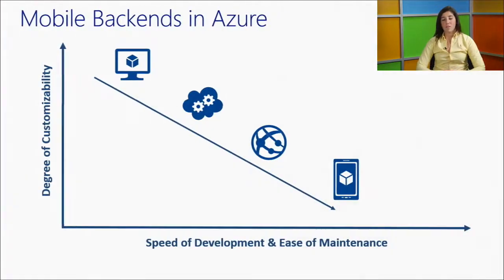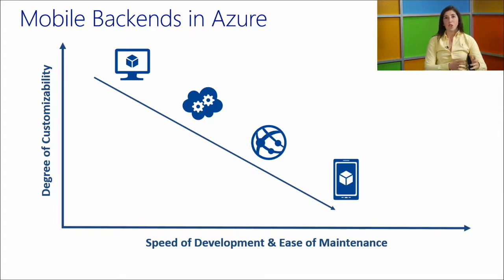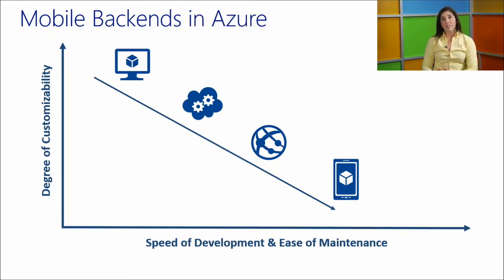Mobile backends in Azure are pretty flexible. You can build a mobile backend using any of the four compute models in Azure: virtual machines (Windows or Linux), cloud services with web and worker roles, Windows Azure Websites, and mobile services. There's a trade-off between the degree of customizability and speed of development and ease of maintenance. The closer you are to the metal with virtual machines, you have all that control.